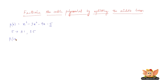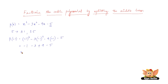we get that p(-1) = (-1)³ - 3(-1)² - 9(-1) - 5. So, (-1)³ is -1, and -3 into (-1)² is -3 into 1, which is -3. Then minus into minus is plus, so 9 into 1 is 9, and minus 5. So we have -1 and -3 is -4, minus 4 and minus 5 is -9. So we have -9 + 9, which gives us 0. Therefore, p(-1) = 0.